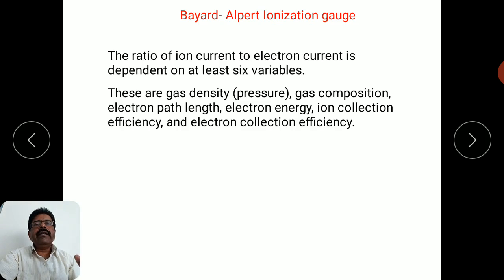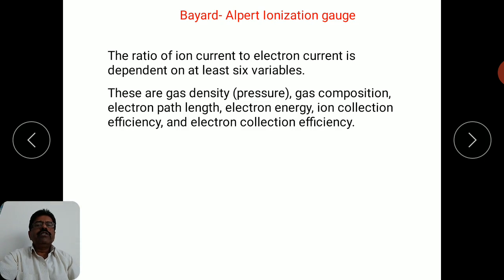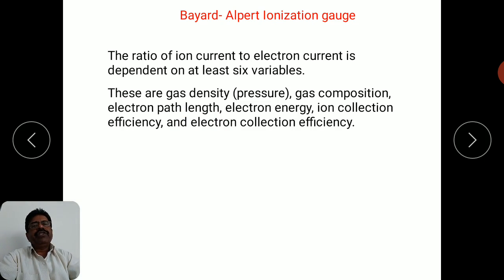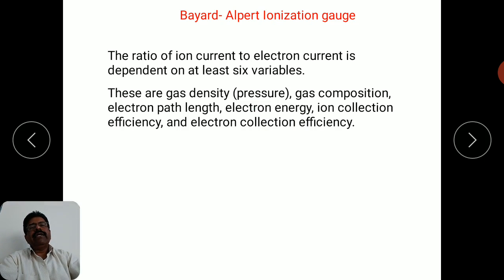Third is electron path length — how far the electron travels inside the chamber. Greater path length means more possible collisions, increasing the possibility of ionization. Fourth is electron energy — the high positive potential applied to the electron collection gun determines the electron's kinetic energy. Higher electron energy increases the chance of ionizing gas species whose ionization potential falls within that energy range.